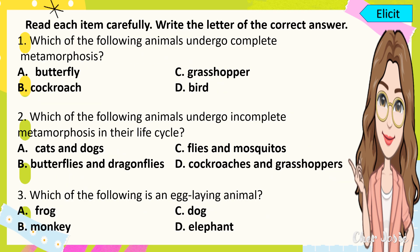Let's check your answers. For number 1, which of the following animals undergo complete metamorphosis? The correct answer is letter A, butterfly. For number 2, which of the following animals undergo incomplete metamorphosis in their life cycle? The answer is letter D, cockroaches and grasshoppers.